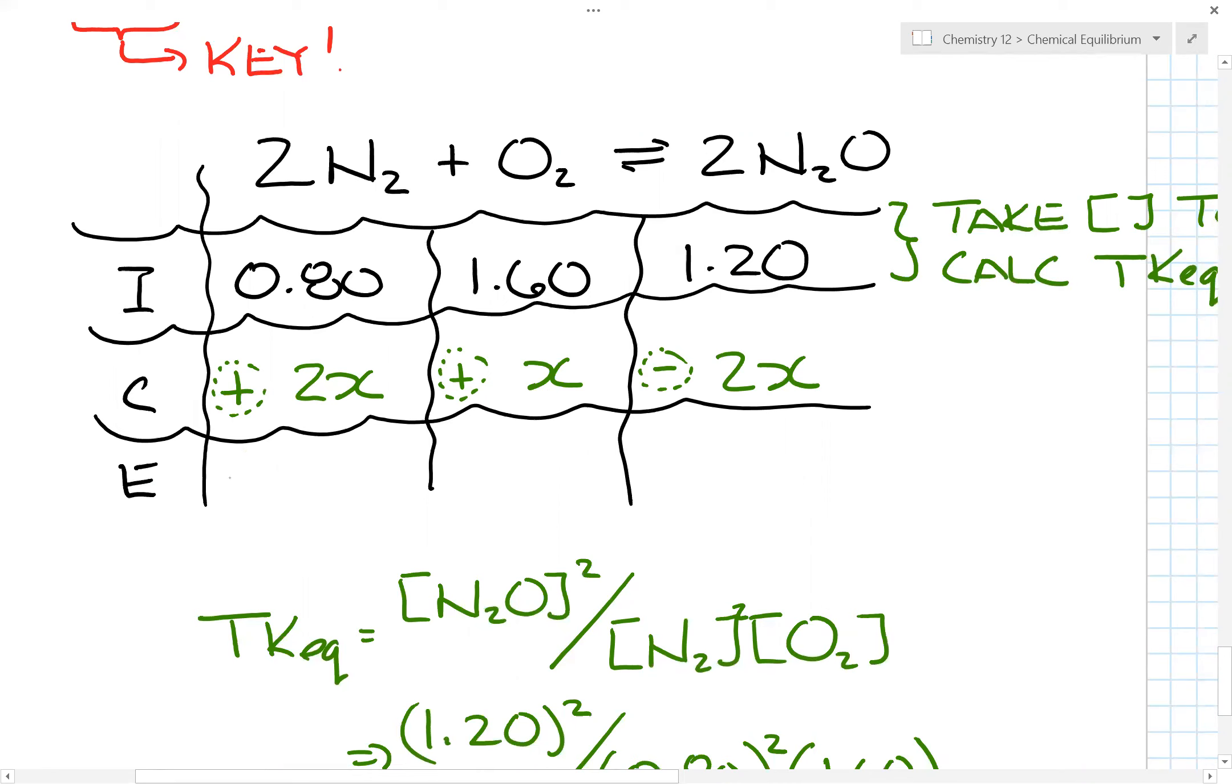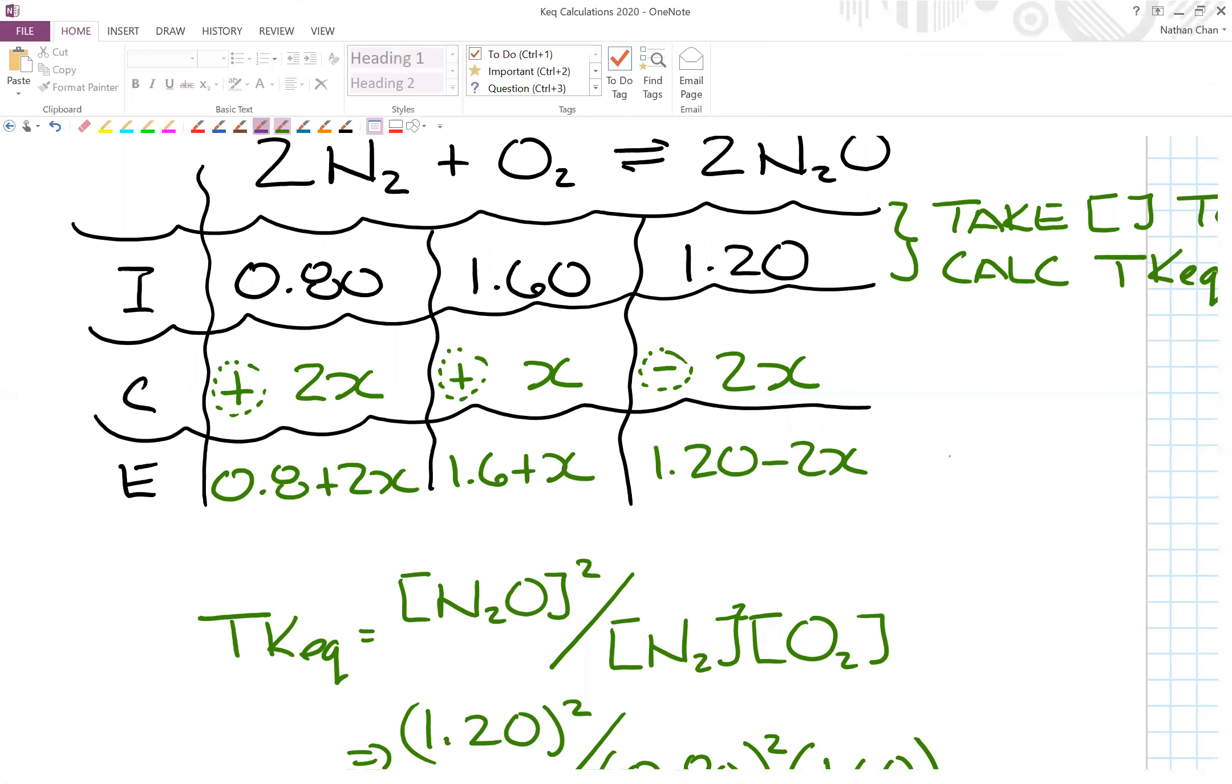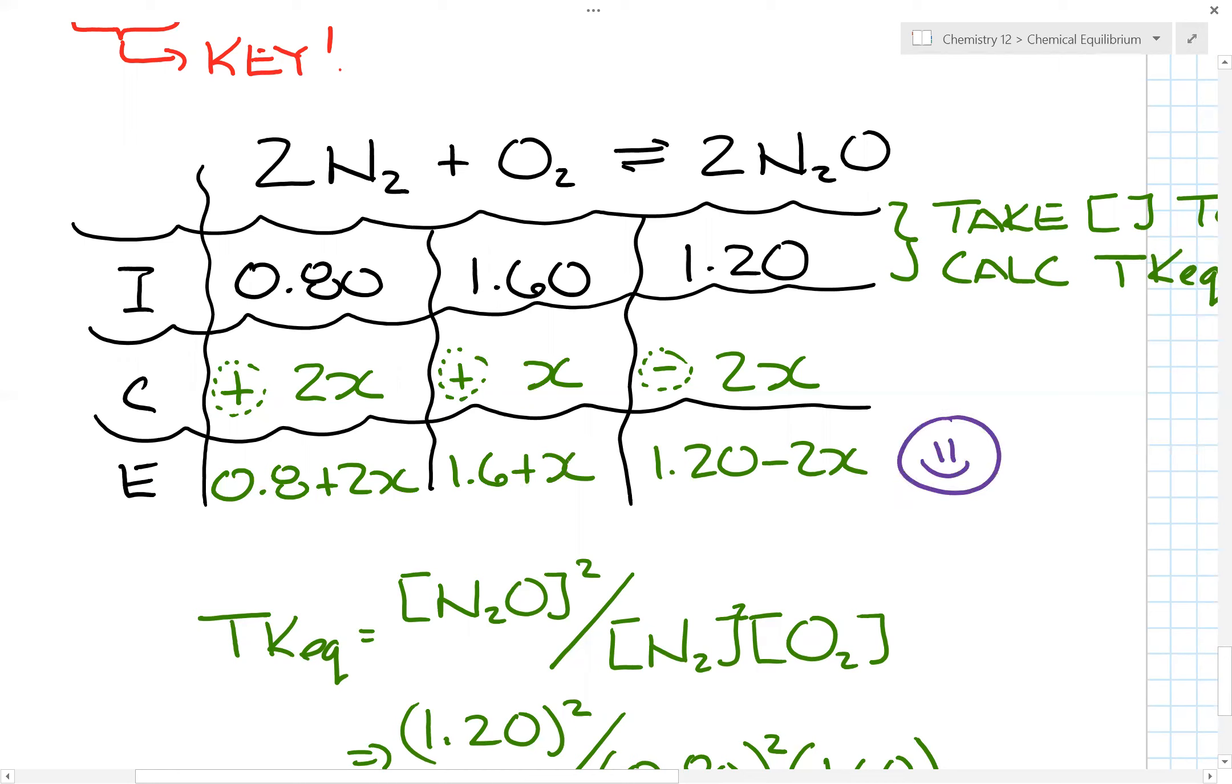All right? And then what you would have is here would be 0.8 plus 2x, you have 1.6 plus x, you have 1.20 minus 2x. And here, what you have now is you have your equilibrium concentrations.